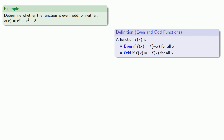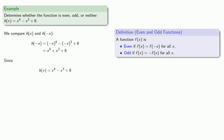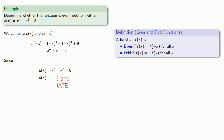Or a function like this. We'll compare h of x and h of negative x. H of negative x is neither h of x nor negative h of x. And so h of x is neither even nor odd.